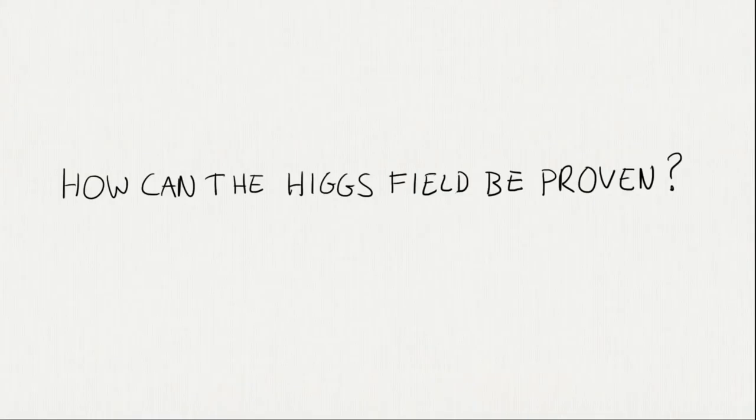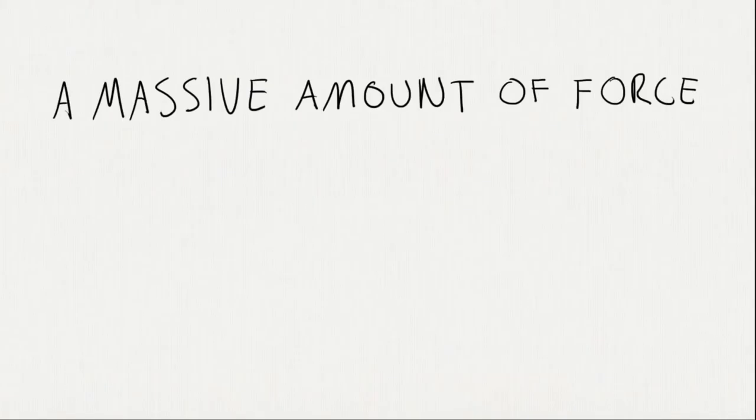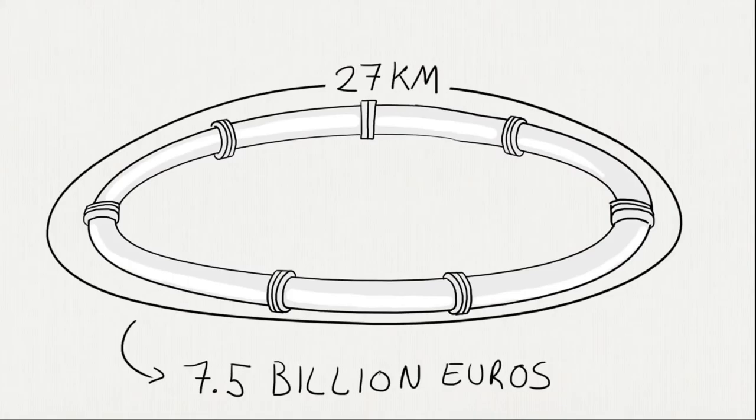So how can the Higgs field be proven? You need to collide two particles and study the decay and see if it contains part of the Higgs field, called a Higgs boson. But a massive amount of force and some super quick measuring instruments are needed. For that reason, CERN created the impressive LHC near Geneva. The LHC has the power and observatory capabilities to discover a Higgs boson.